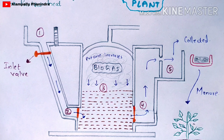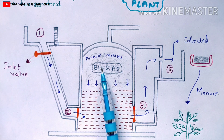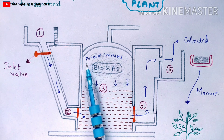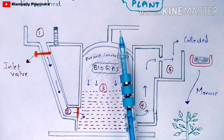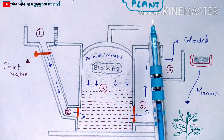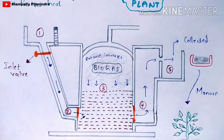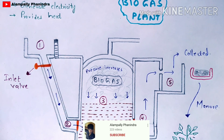This biogas is methane. The methane gas is obtained from the methanogen bacteria through decomposition in water. The collected methane gas is sent to markets in the form of cylinders, where it is used for cooking, powering vehicles, generating electricity, and providing heat.